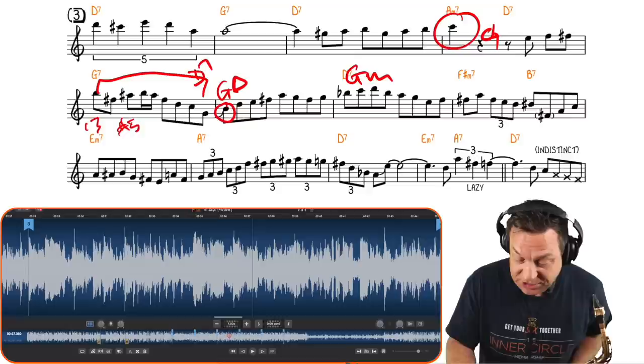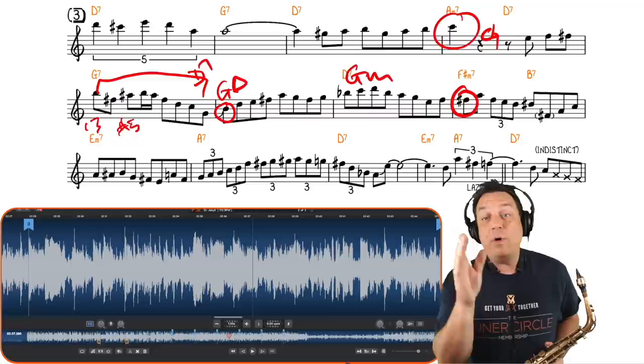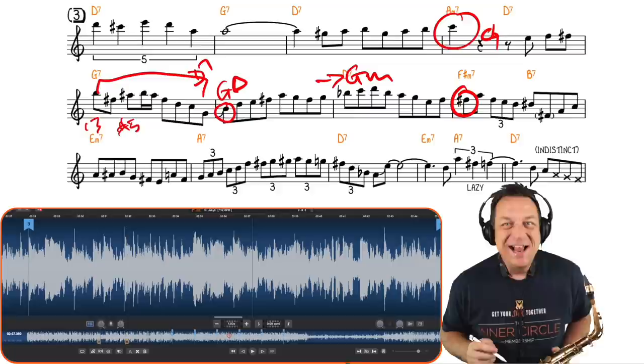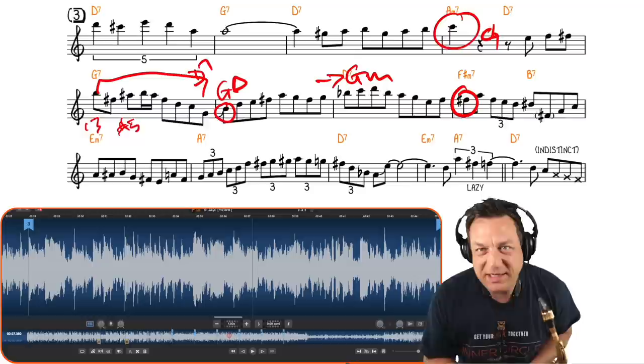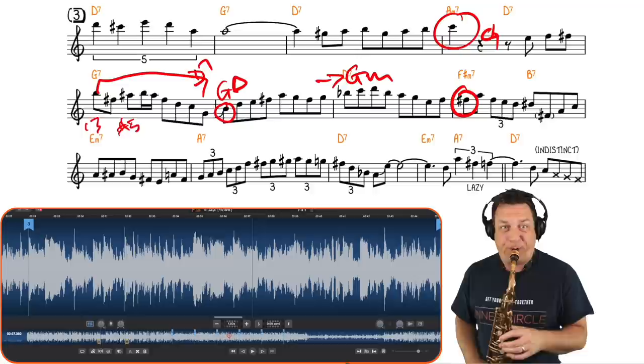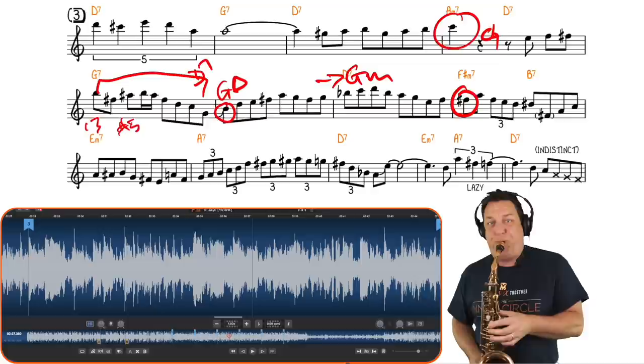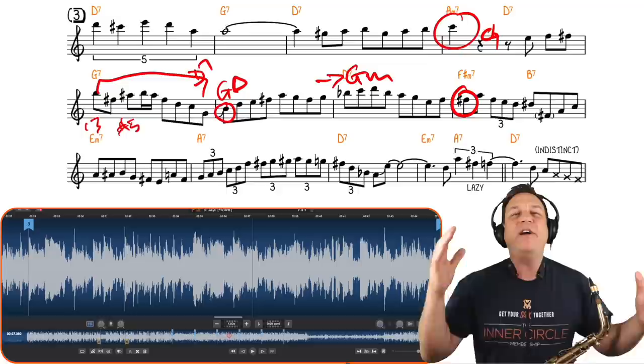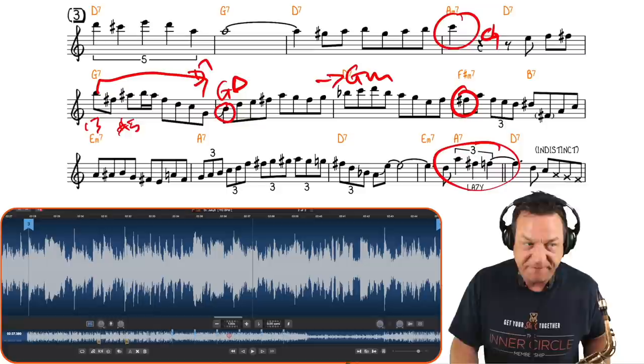So G major, then the G minor, and then that resolves to the third, what would have been the third of the D chord here. But it's a bar later. And it smoothly transitions into the F sharp minor seven to B7 lick here. And then the whole thing rounds off with that beautiful finish, the beautiful sort of bluesy sound around here in the final bar.